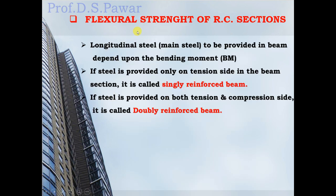The longitudinal or main steel provided in a beam depends on the bending moment. If steel is provided only on the tension side of the beam section, it is called a singly reinforced beam. When steel is provided on both the tension and compression sides, it is called a doubly reinforced beam.